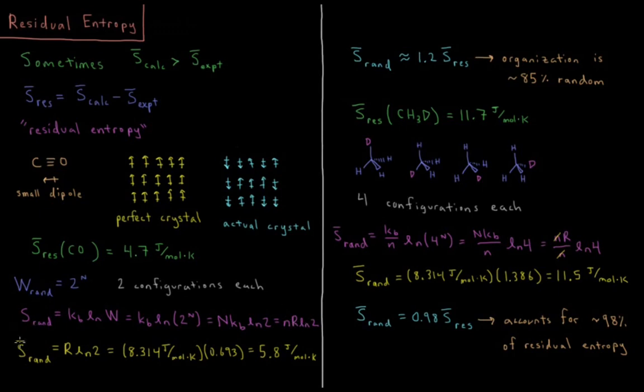And the molar entropy is the entropy divided by the number of moles, so nr log 2 divided by n is just r log 2. So the molar entropy we would expect from this random configuration would be the gas constant r times the natural log of 2. So that's 8.314 joules per mole Kelvin times 0.693, that would be 5.8 joules per mole Kelvin.